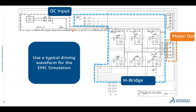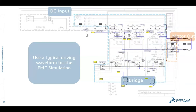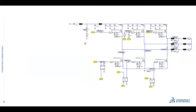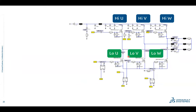Looking at the actual test schematic, you can see the LISN, three transistors for the high U, V, and W values, and three transistors for the low U, V, and W values. On top are the three high FETs, and on the bottom the three low FETs.